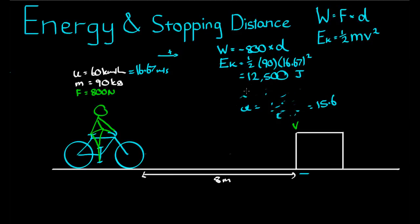So if its initial kinetic energy was 12,500, and it brakes all the way up until it hits the car there, then the total work done by the brakes is equal to 800 times 8, or 6,400 joules.